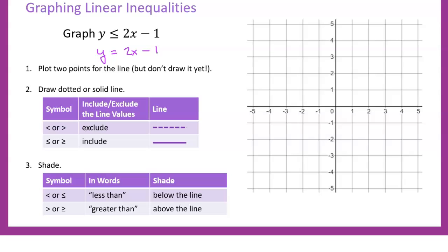The first step is to plot two points for the line, the same way we've been doing. We have our slope and our y-intercept — slope is 2 and y-intercept is -1. We start at the y-intercept, then go up 2 and over 1 for our rise of 2, run of 1. We'll put a dot there.